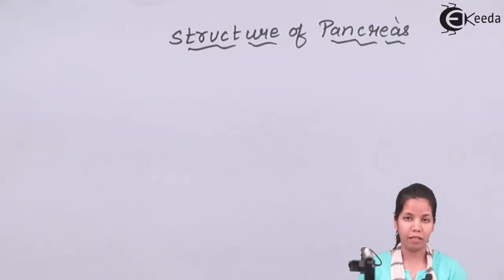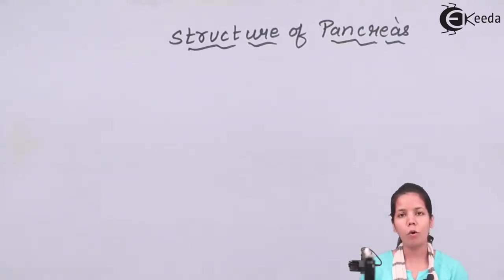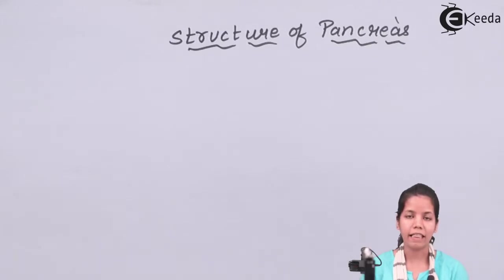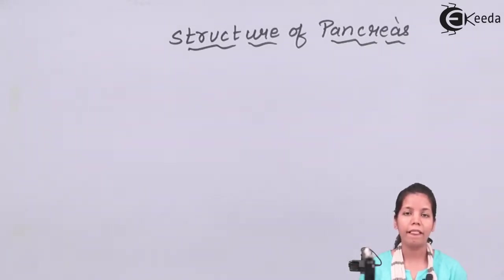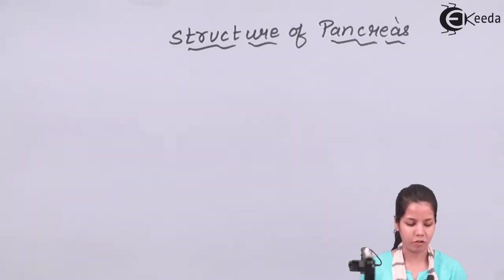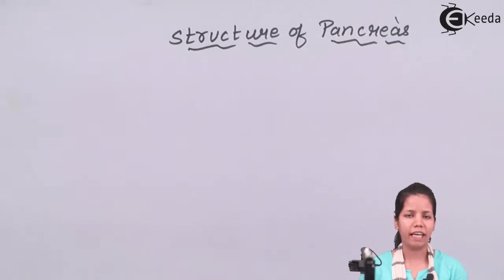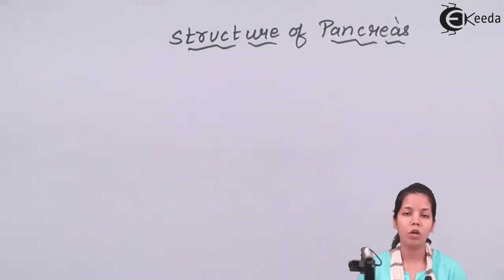These lobules can be either alpha lobules or beta lobules. Inside the lobules there are islets of Langerhans cells, and these islets of Langerhans cells have been arranged such that the alpha lobules and beta lobules are discrete in fashion. The endocrine part is basically made up of this group of cells, which are connective tissues — these connective tissues are the islets of Langerhans, which constitute the pancreatic duct.